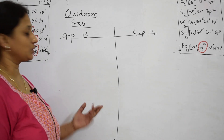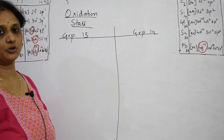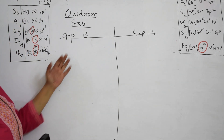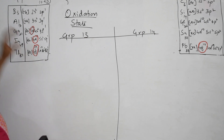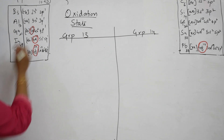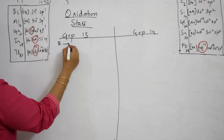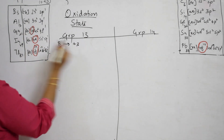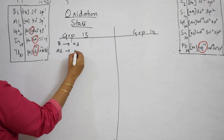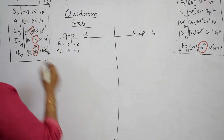Let us come back and do one more trend in p-block elements: oxidation states. When I observe the electronic configuration, boron can exhibit a +3 oxidation state. Aluminium can also give 3 electrons and exhibit a +3 oxidation state.